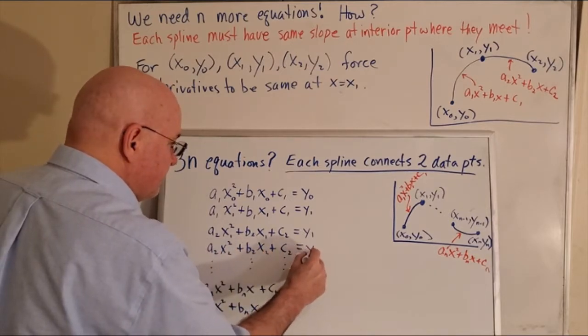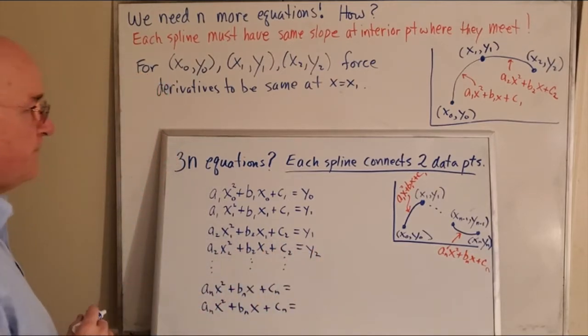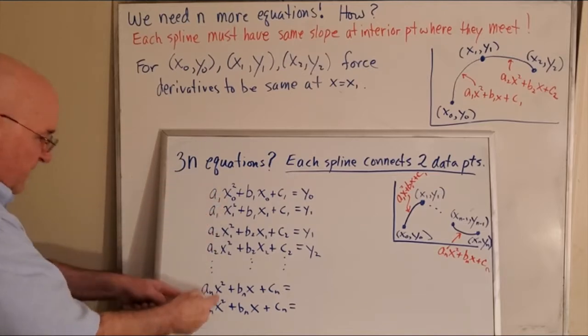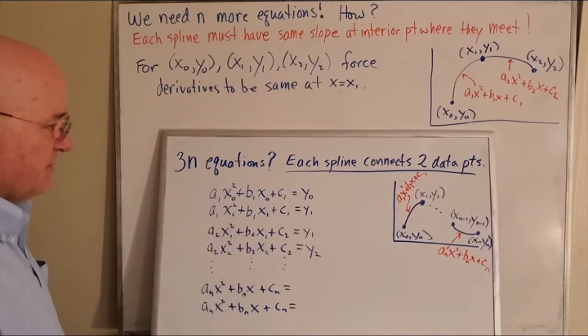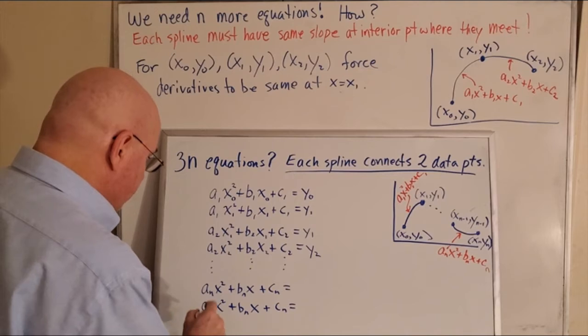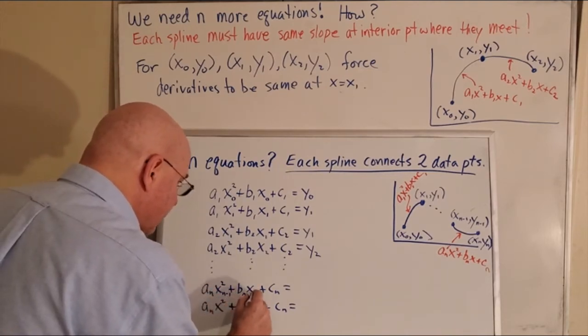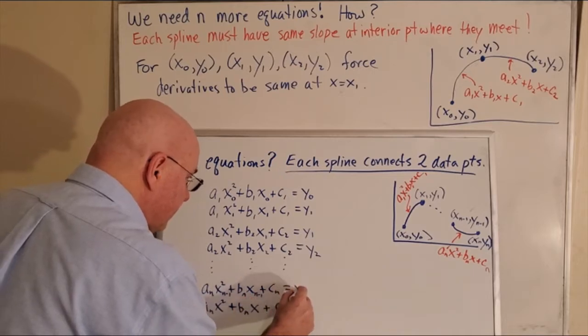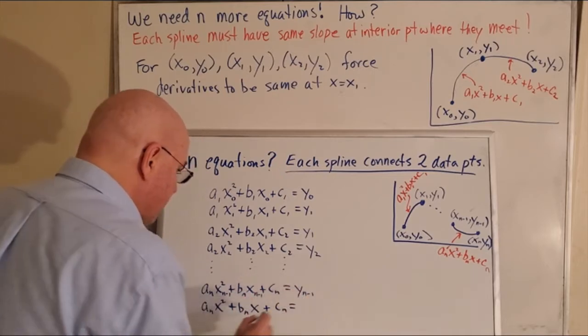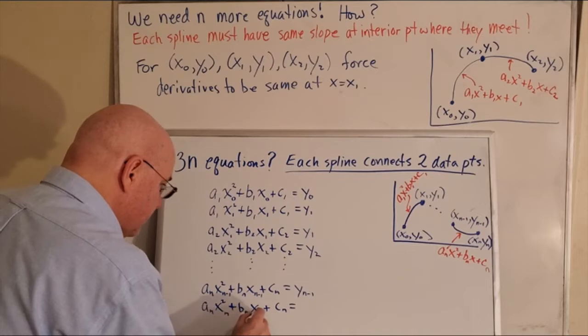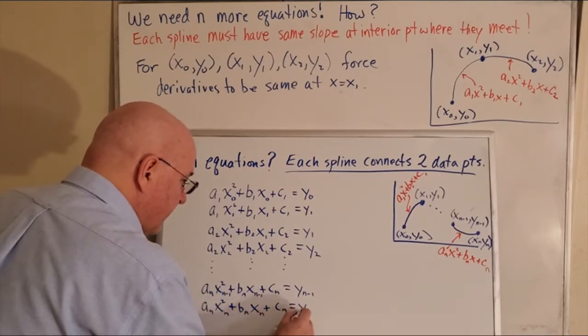And then we jump all the way down to the last one that I pictured on the right. This would be n minus 1. x(n-1) would give us y(n-1), but if I plug in xn, I get yn.